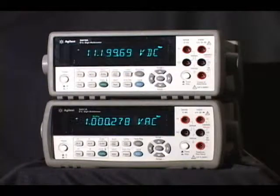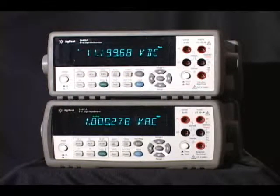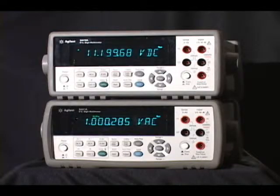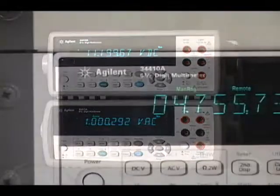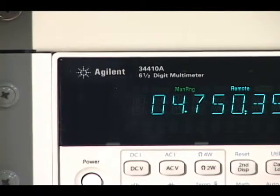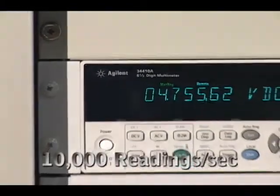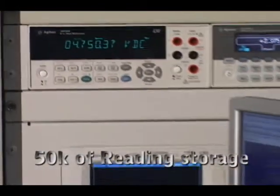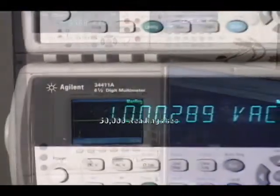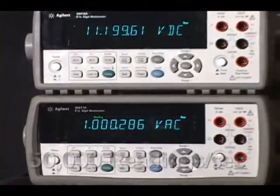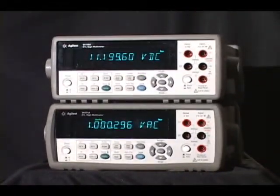In system applications, the 34410A and its companion, the 34411A, offer industry-leading measurement speed and throughput, considerably reducing test times. The 34410A can output up to 10,000 readings per second with four and a half digits of resolution. The 34411A hits 50,000 readings per second at four and a half digits to a PC.